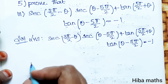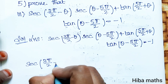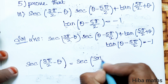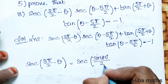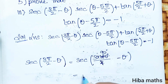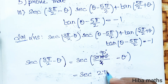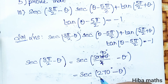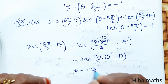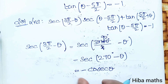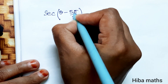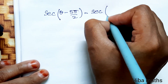Now for the first term, sec(3π/2 - θ): substituting π = 180°, we get 3 × 180 divided by 2, which gives us 270°. So sec(3π/2 - θ) becomes sec(270° - θ). Now sec(270° - θ) — we need to find its value.